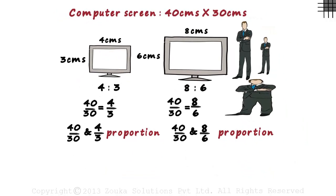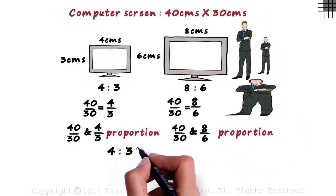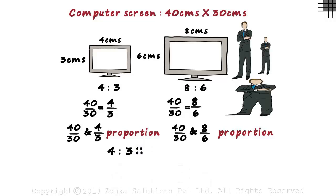There's a special way to write it. We write it as 4 colon 3, 2 colons and 8 colon 6. 4 colon 3 simply is the ratio 4 by 3, and 8 colon 6 is the ratio 8 by 6.